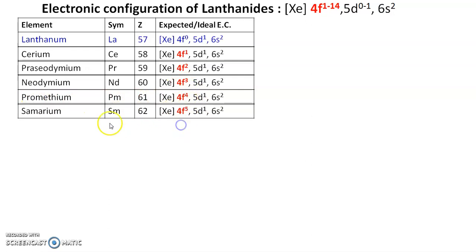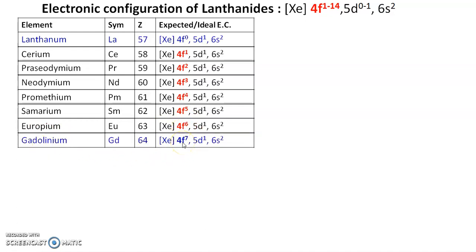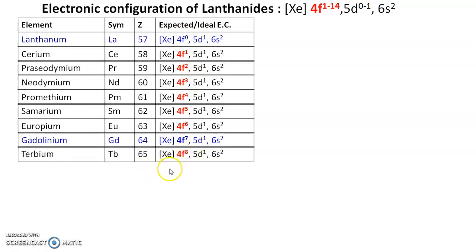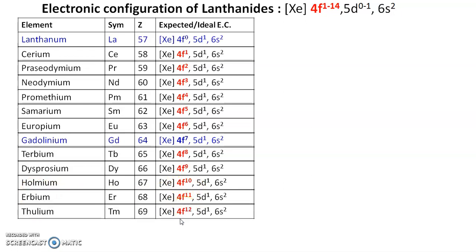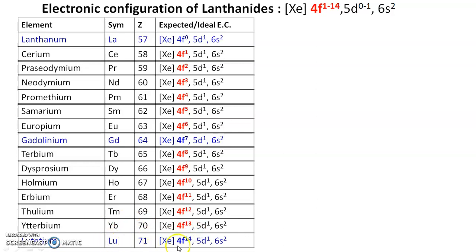Continuing the ideal electronic configurations with [Xe] 5d¹ 6s² constant: promethium 4f⁴, samarium 4f⁵, europium 4f⁶, gadolinium 4f⁷. Then terbium 4f⁸, dysprosium 4f⁹, holmium 4f¹⁰, erbium 4f¹¹, thulium 4f¹², ytterbium 4f¹³, lutetium 4f¹⁴. At lutetium, the f orbital is completely filled.